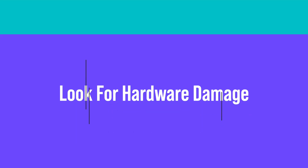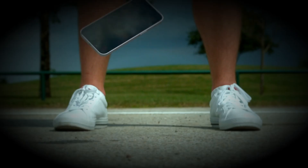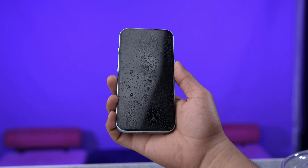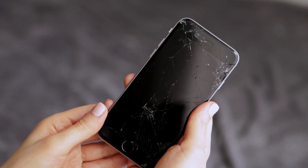So that was all about software, but there could be potential hardware damage as well because of which your iPhone is behaving in this manner. If you have dropped your iPhone on a hard surface or exposed it to water, it might have suffered hardware damage, which could be why you are facing the green screen issue. Check for any scuffs, scratches, or cracks on your iPhone's display — if there are any, that could be the reason why the problem occurred.